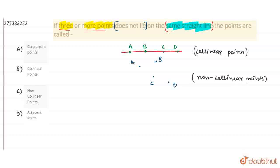So, the answer is C part. Non-collinear points. And the other options are also seen.